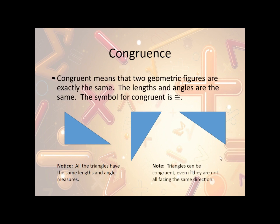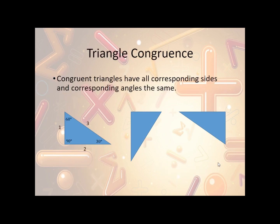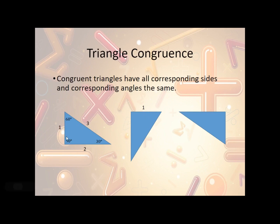So triangles can be congruent even if they are not facing the same direction. For instance, we have three triangles here, and we're given the sides and angle measures. If they're all congruent, then we need to make sure that their corresponding sides and angles are congruent. So if this side is one, that means this side here would also be one, because that's the corresponding side. The bottom side here is two, and this side length is two. And then the longest side, the hypotenuse, is three, which is this side here.